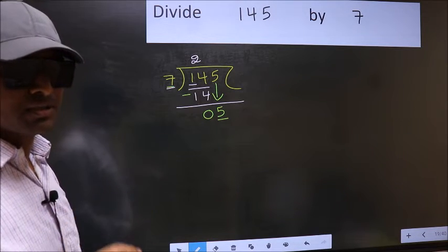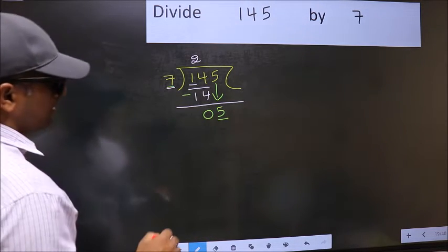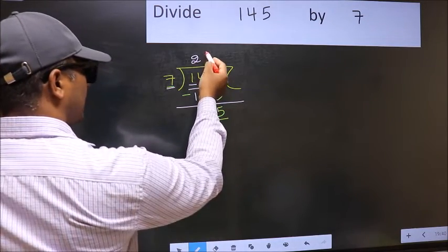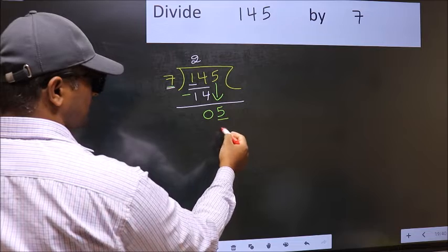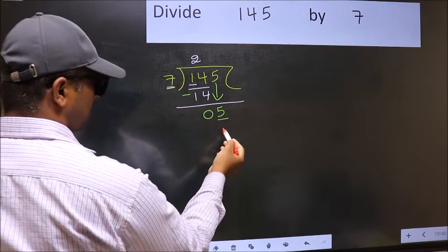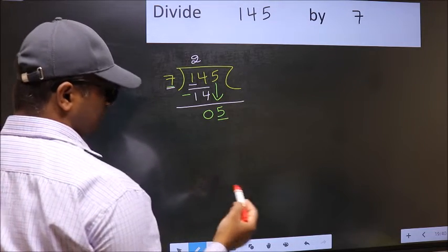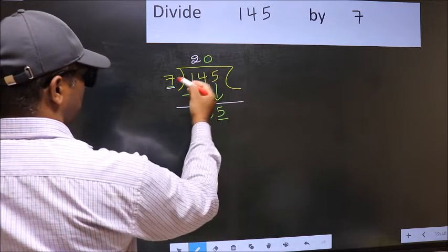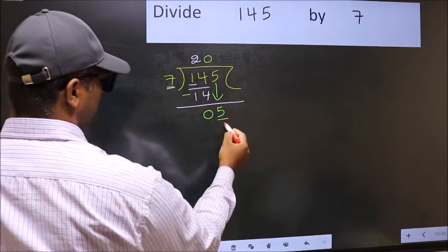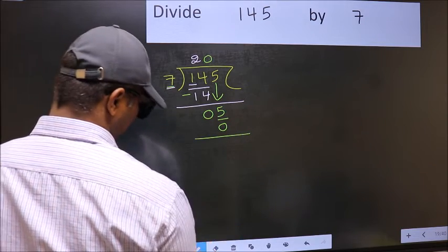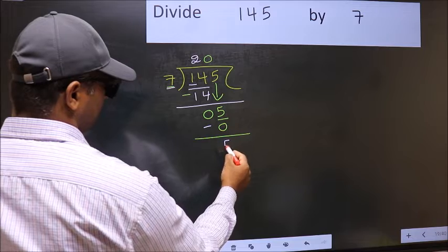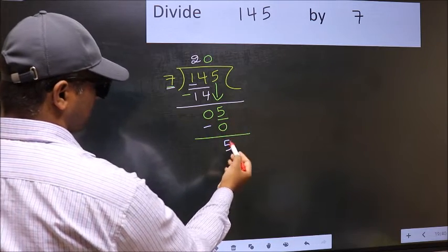Instead, what number should we take here? If I take 1, we will get 7, but 7 is larger than 5. So we should take 0. 7 into 0, 0. Now you should subtract. 5 minus 0, 5.